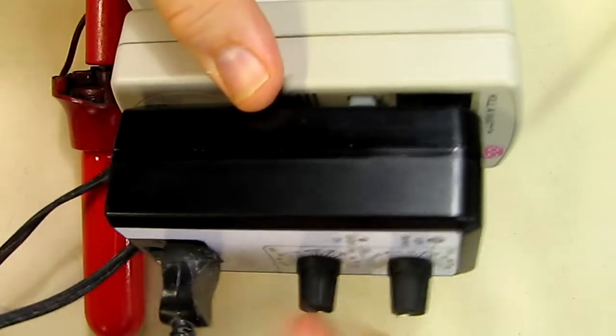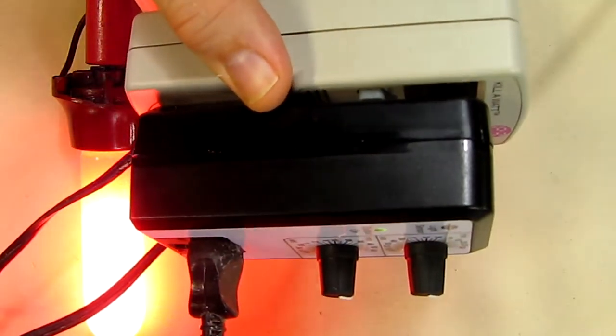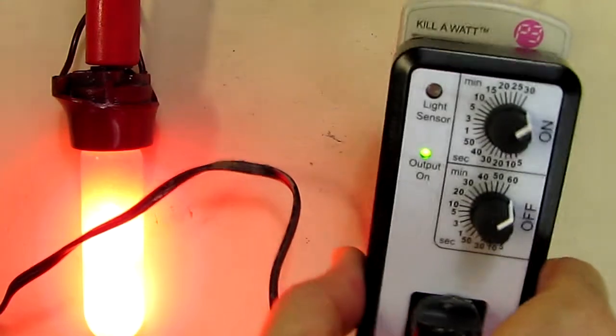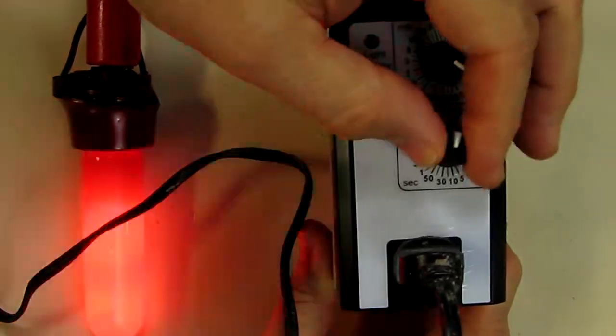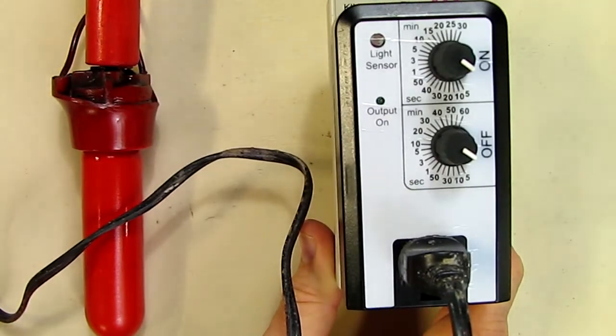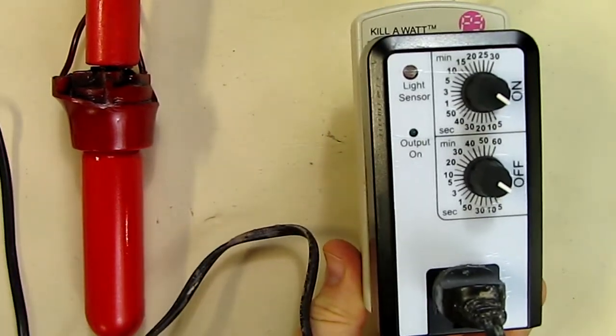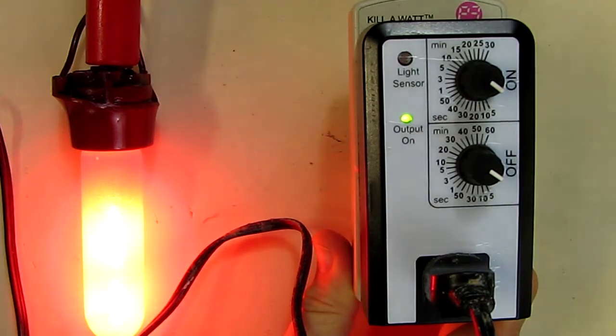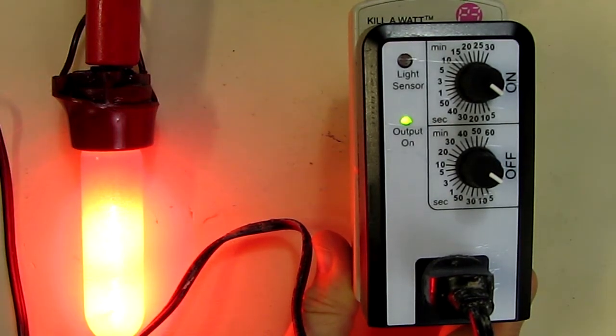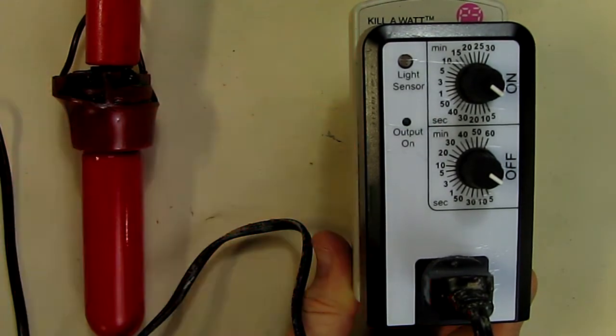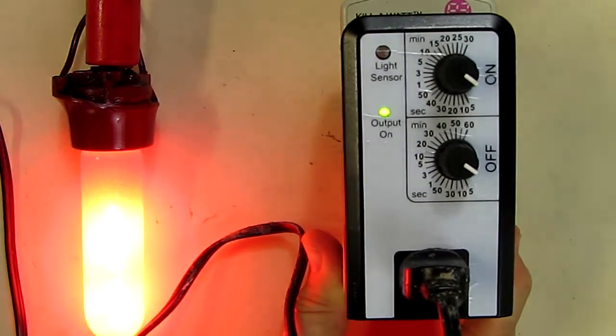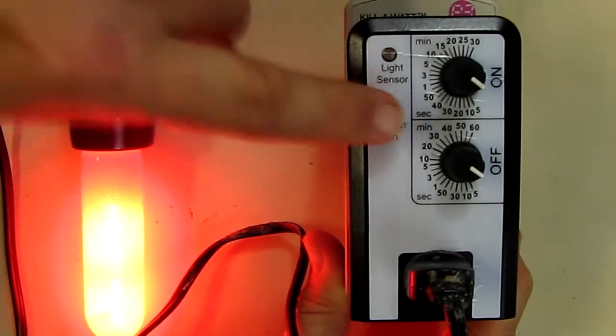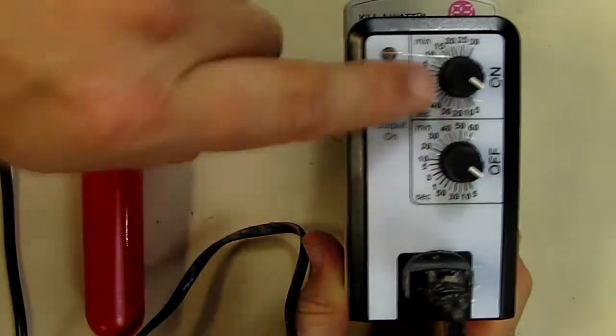Then turn them both to high and now you can see the light came on. Now let's set it to the quickest setting right here which will allow us to see what's going on faster. So you can see it's turning on for five seconds and shutting off for five seconds, it's an equal duty cycle.